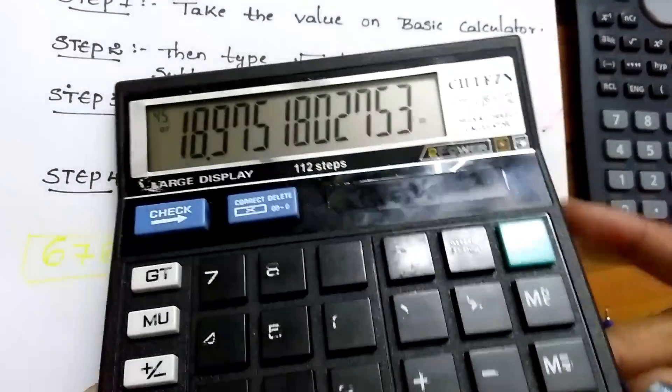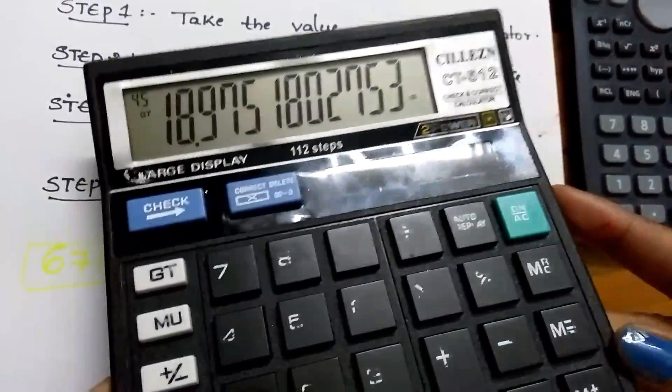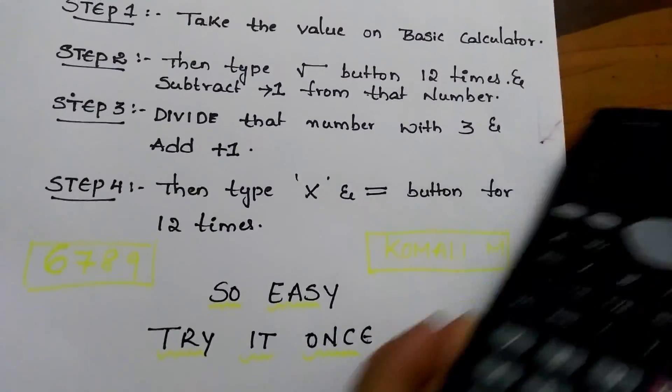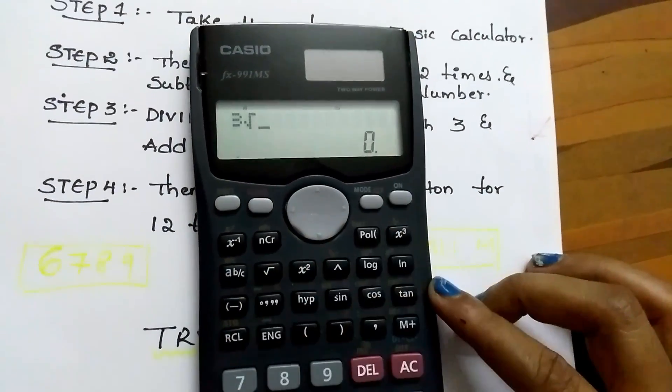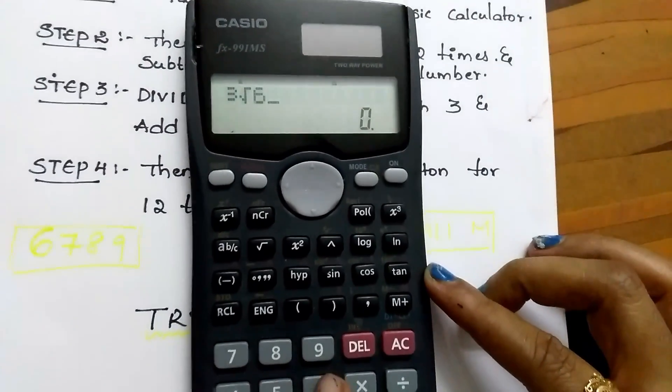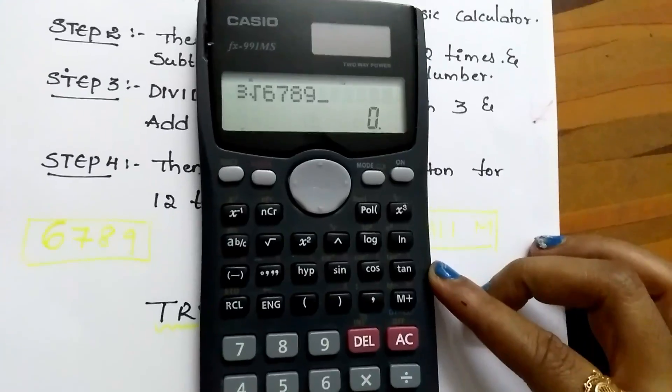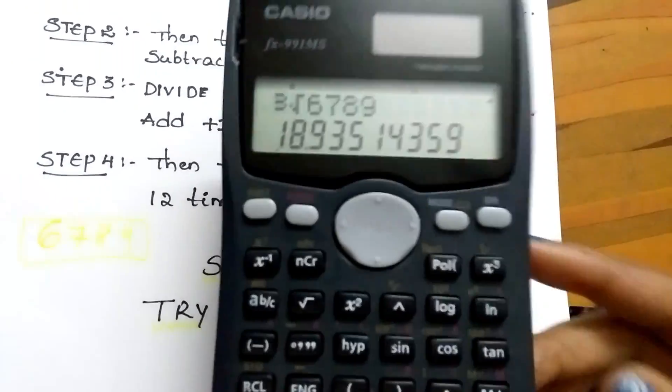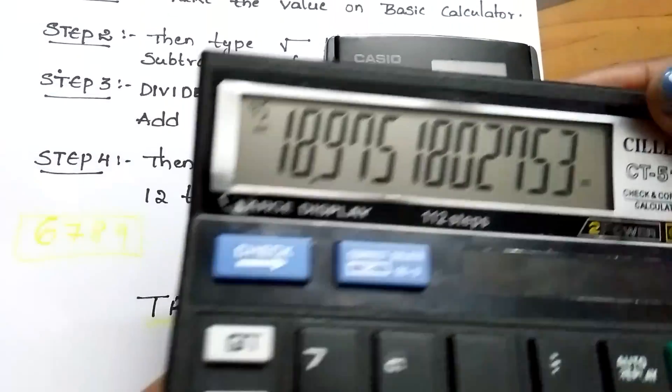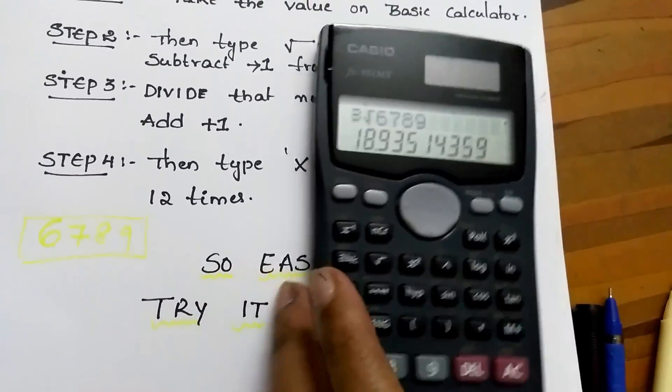Let us see whether it is correct or not by using scientific calculator. Cube root of 6789. See students, 18.9, that's it, 18.9. We got the correct answer.